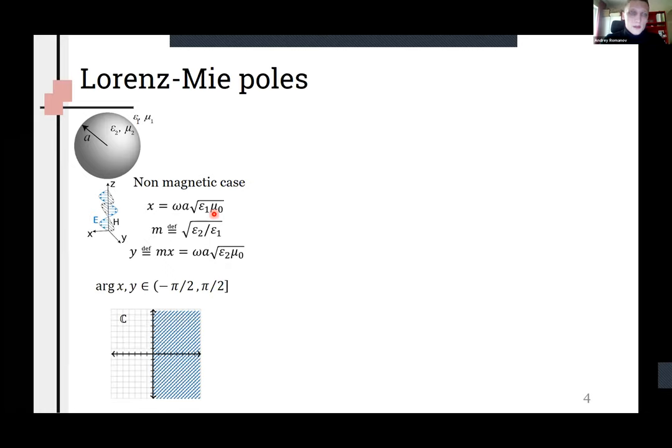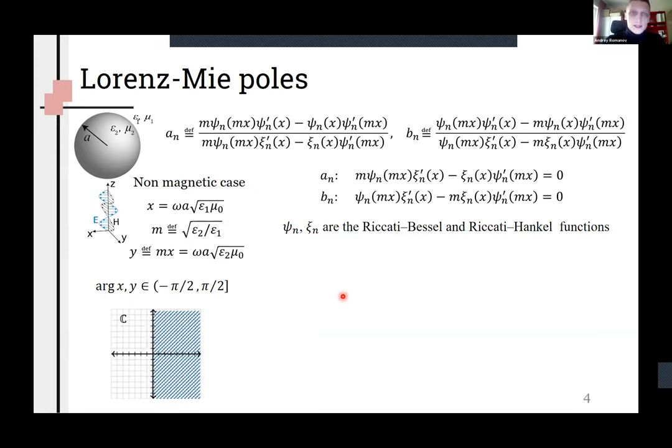First of all, we are considering non-magnetic space and all complexity lies in permittivity. Also we are using a standard size parameter and size parameter related to a sphere. Due to square operation these parameters defined in a left half of complex plane.